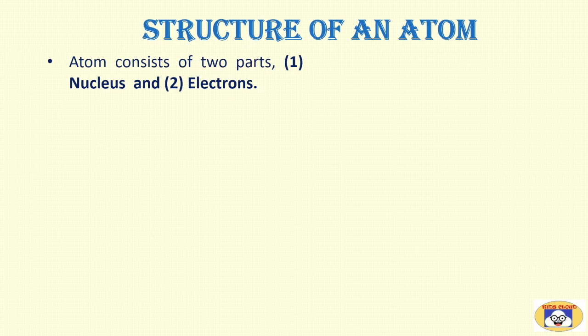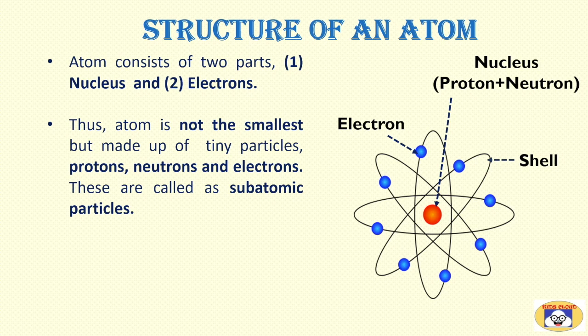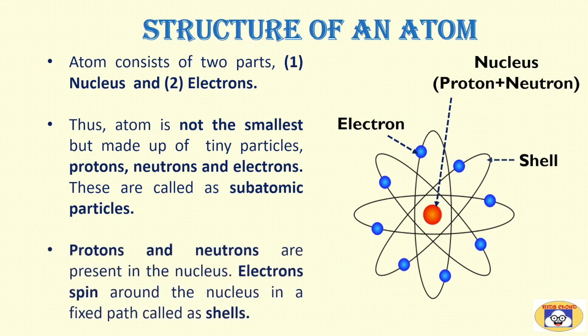Let's see the structure of an atom in detail. Atom consists of two parts: nucleus and electrons. So now we can say atom is not the smallest but made up of tiny particles called as proton, neutron and electrons. These are called as subatomic particles. Protons and neutrons are present in the nucleus, while electrons spin around the nucleus in a fixed path called as shells.